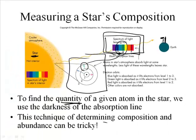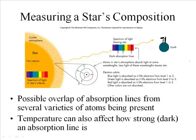Alright. Now the technique for determining the composition and abundance can be tricky. So I don't need to write this down, but astronomers, it's not as easy as I'm kind of painting the picture. It can get harder to understand, but that's kind of the good gist of it. Sometimes we have overlap of absorption lines from several varieties of atoms being present, and that creates some of the tricky problems.